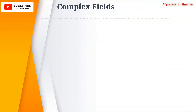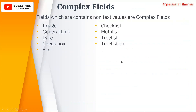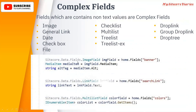Complex fields are fields which contain non-text values. Simple fields are text fields; anything that is not a text field is called a complex field. Examples include: image, general link, date, checkbox, file, checklist, multilist, drop link, group drop link, and drop tree. With complex fields, you cannot directly take or render the values — you have to work with them as complex objects.